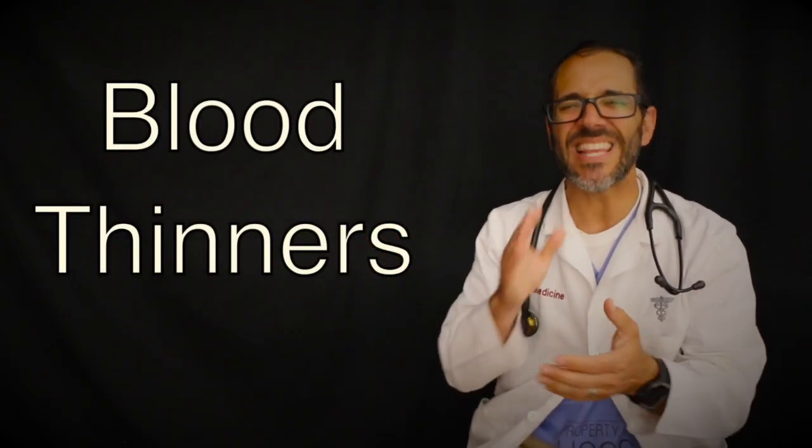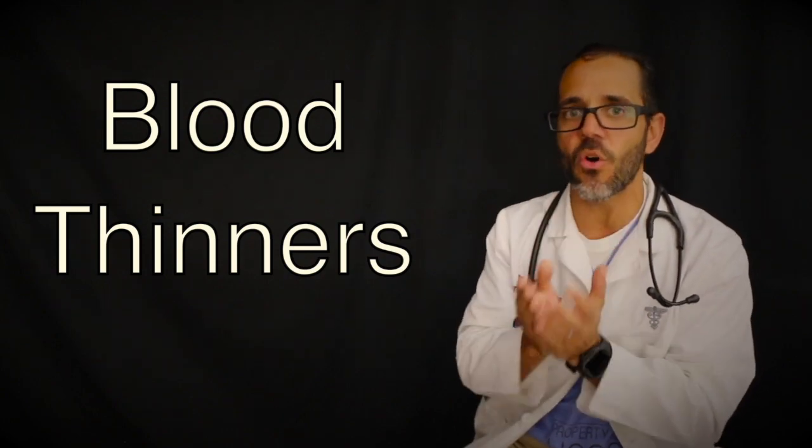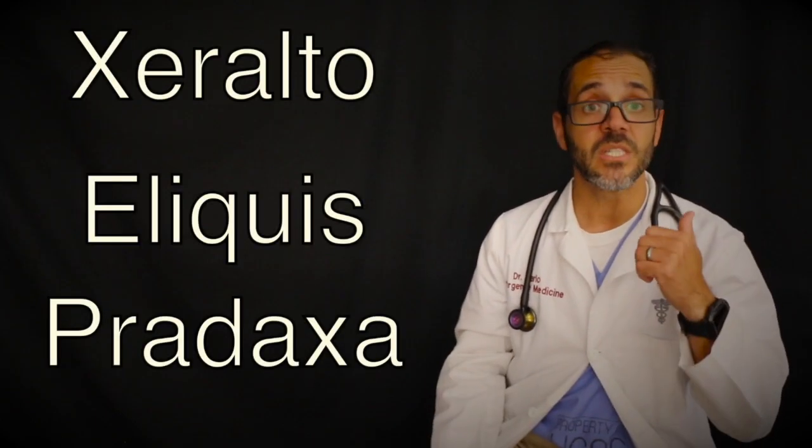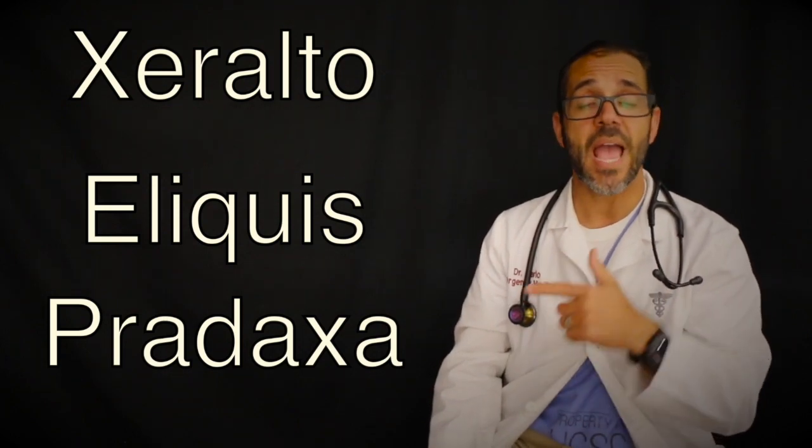So let's talk about anticoagulation first. Anticoagulants are medications commonly called blood thinners. They don't actually dissolve the clot, but rather they help prevent new blood clots from forming. There are several different medications that might be given as anticoagulation. For example, these pills, the common names are Xarelto, Eliquis, and Pradaxa.